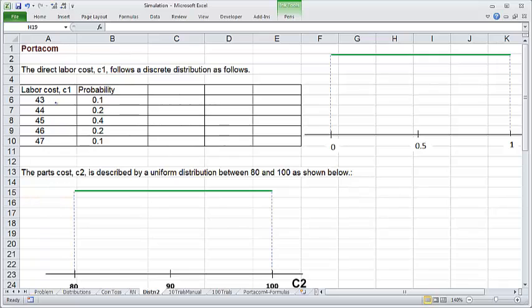So for instance, 43 has probability 0.1. So the length of the interval corresponding to 43 must be 0.1. If we start at 0, then we go to 0.1. So this interval would correspond to the value of 43. If we get a number between 0 and 0.1 from the rand function, then we generate 43 for the labor cost.